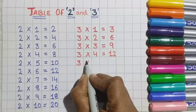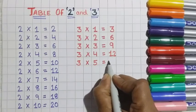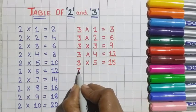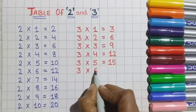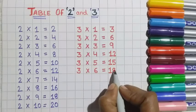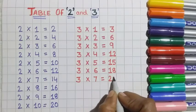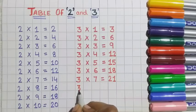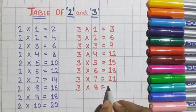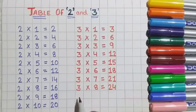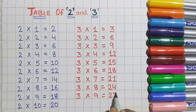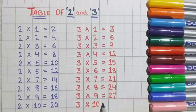Three 5s are 15. Three 6s are 18. Three 7s are 21. Three 8s are 24. Three 9s are 27. Three 10s are 30. Now learn once again.